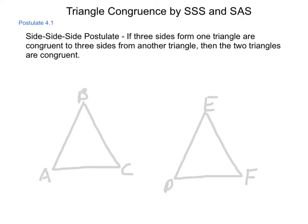So in the diagram that is shown here, if I can prove that AB is congruent to DE, that BC is congruent to EF, and that CA is congruent to FD, then I would have sufficient information to state that triangle ABC is congruent to triangle DEF.